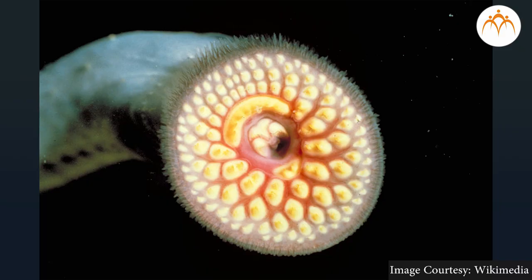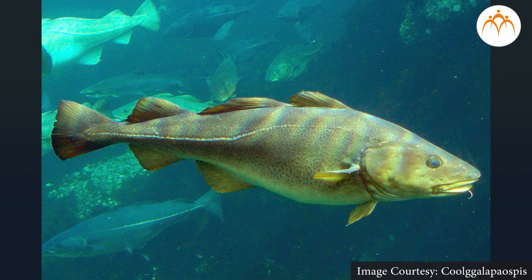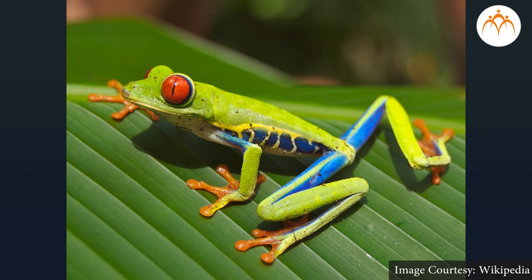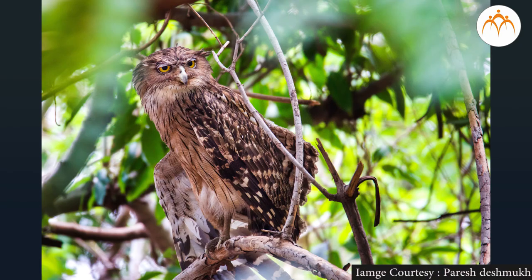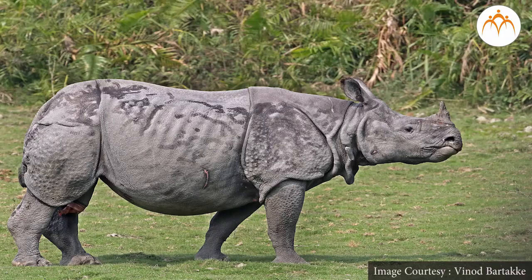Phylum Vertebrata is divided into six subphyla: Cyclostomata, Pisces, Amphibia, Reptilia, Aves, and Mammalia.